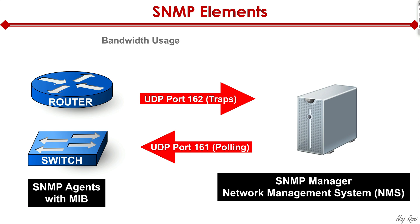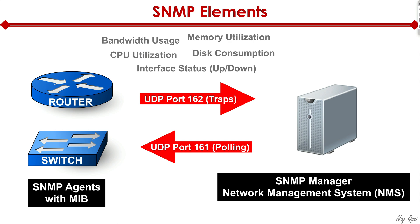You would monitor events like bandwidth usage on a device or interface, CPU utilization, memory utilization, disk consumption, and interface status — up or down. These are some examples of SNMP MIBs. A typical router could have thousands — upwards of 5,000 MIBs defined — and the same goes for switches, giving you a lot of information to pull and many traps to send to the NMS.